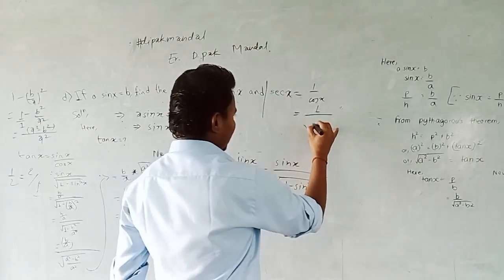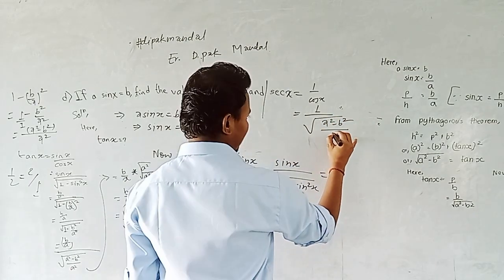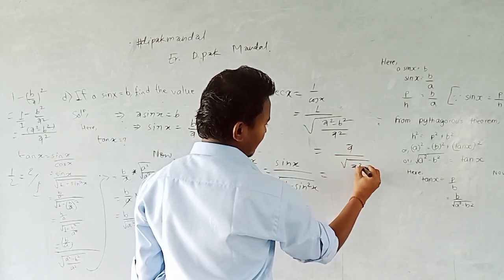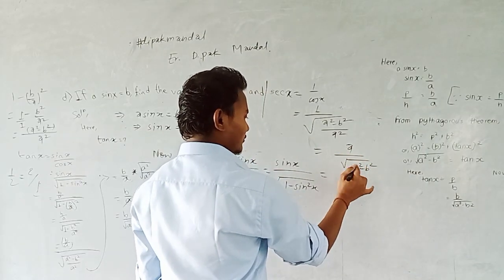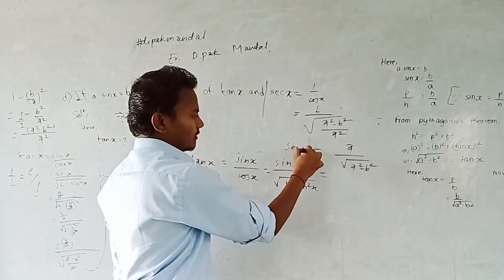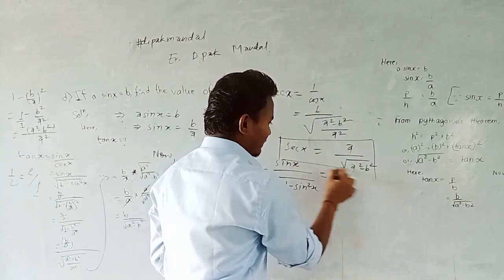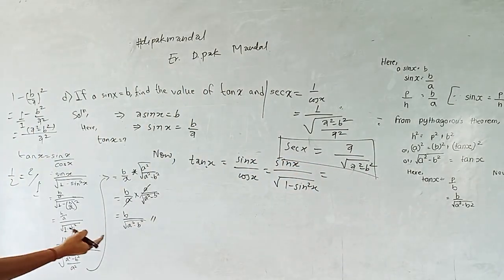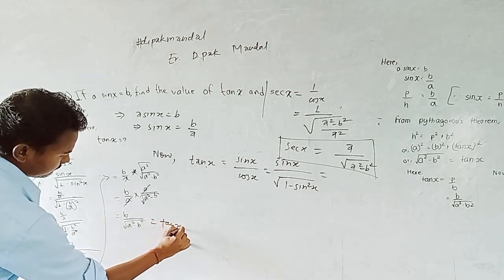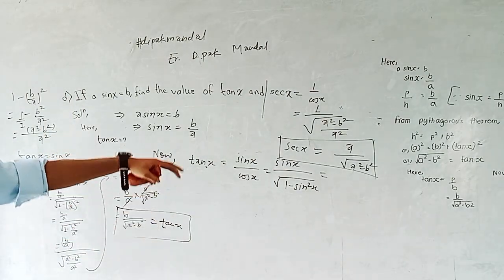This value becomes root under a squared minus b squared by a squared, which means sec x equals a by root under a squared minus b squared. So tan x and sec x are the two required answers.